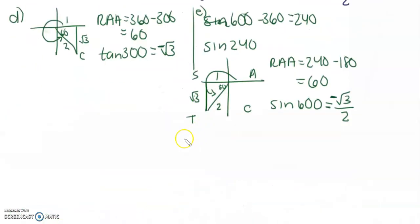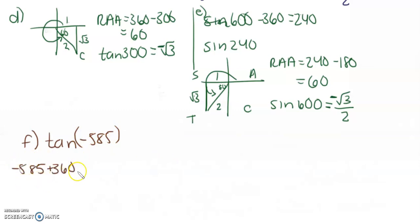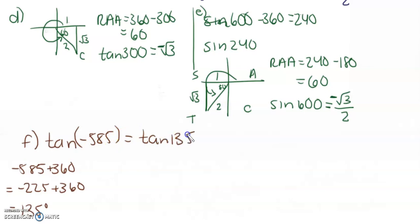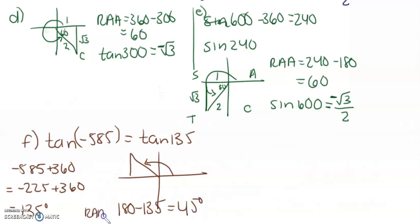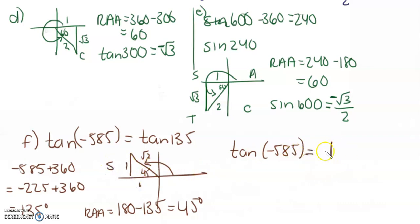Tan of negative 585. I'm going to take negative 585 and add 360 onto it to get negative 225, then add 360 again to get 135. So this is equivalent to tan of 135. I'll subtract 135 from 180 to get our related acute angle of 45 degrees, giving us a 1, 1, root 2 triangle. So tan of negative 585 is 1 over 1, which is just 1. But this is in the S quadrant, so it's negative 1.